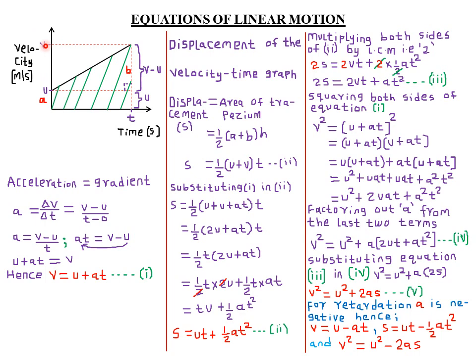When we talk of change in velocity, we mean final velocity v minus initial velocity u. Change in time is the final time minus the initial time, which was zero. So we get delta v divided by delta t — that is the definition for acceleration: change in velocity over time. Therefore, acceleration a equals v minus u divided by t.